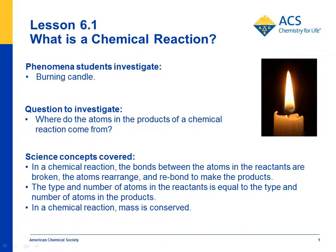In lesson 6.1, students look at a burning candle and have a discussion about whether it's a chemical reaction or not. And if it is, what are the reactants and what are the products? The question to investigate is: where do the atoms in the products of a chemical reaction come from?